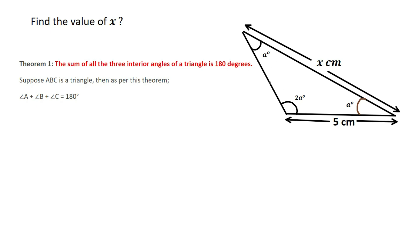We have the three angles: a degrees, a degrees, and 2a degrees. According to the theorem, we can write a + a + 2a = 180 degrees.